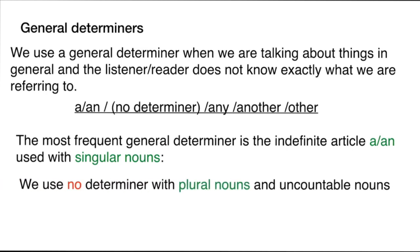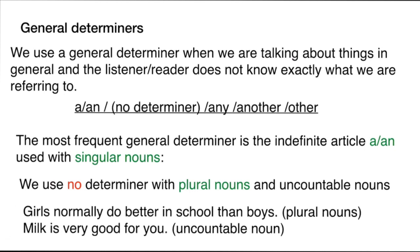We use no determiner with plural nouns and uncountable nouns — that is a general rule of articles. For example, 'Girls normally do better in school than boys' uses a plural noun with no determiner, and 'Milk is very good for you' uses an uncountable noun with no determiner.